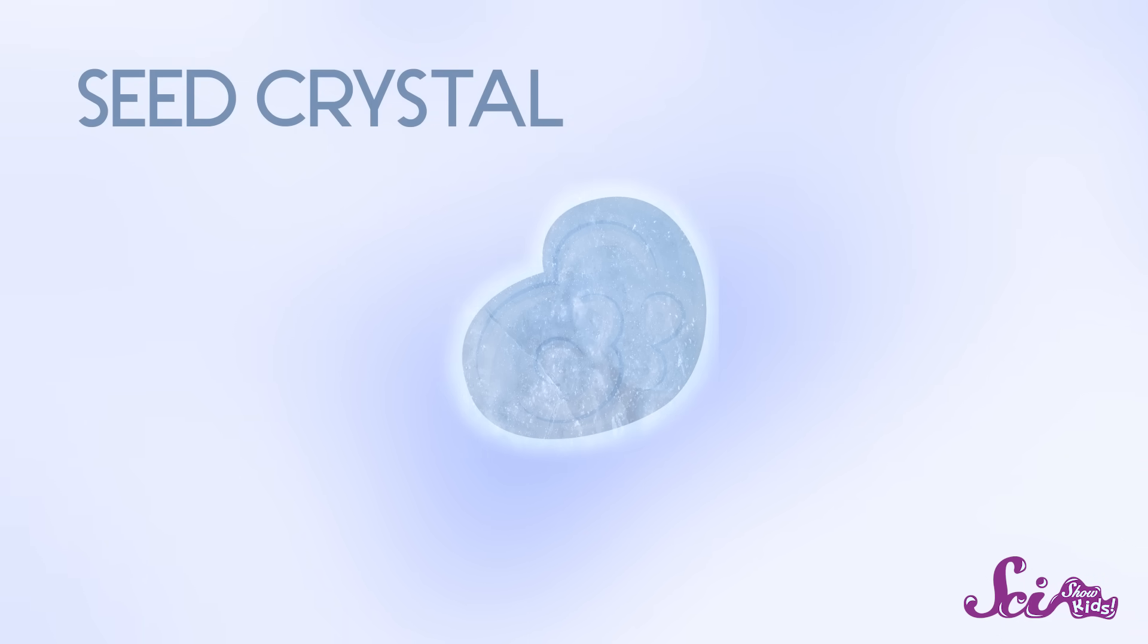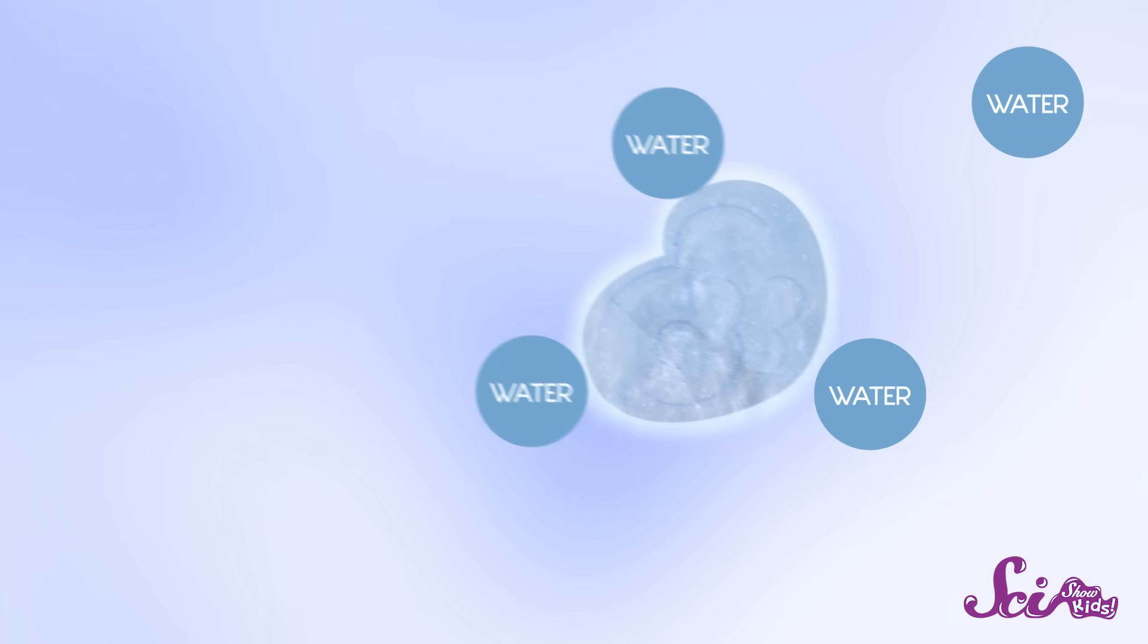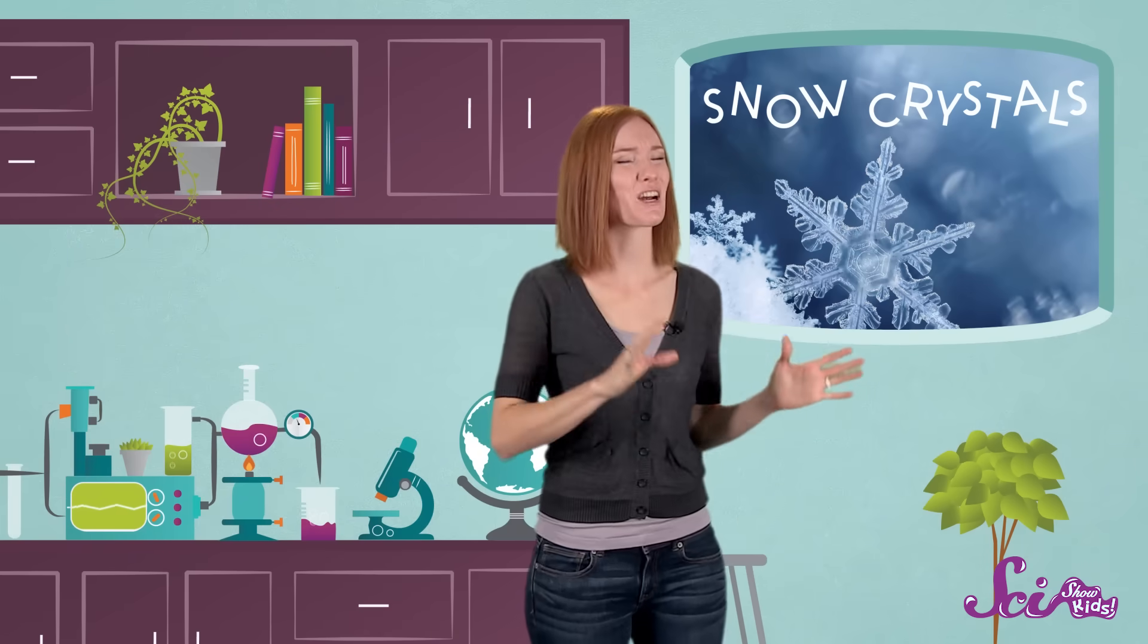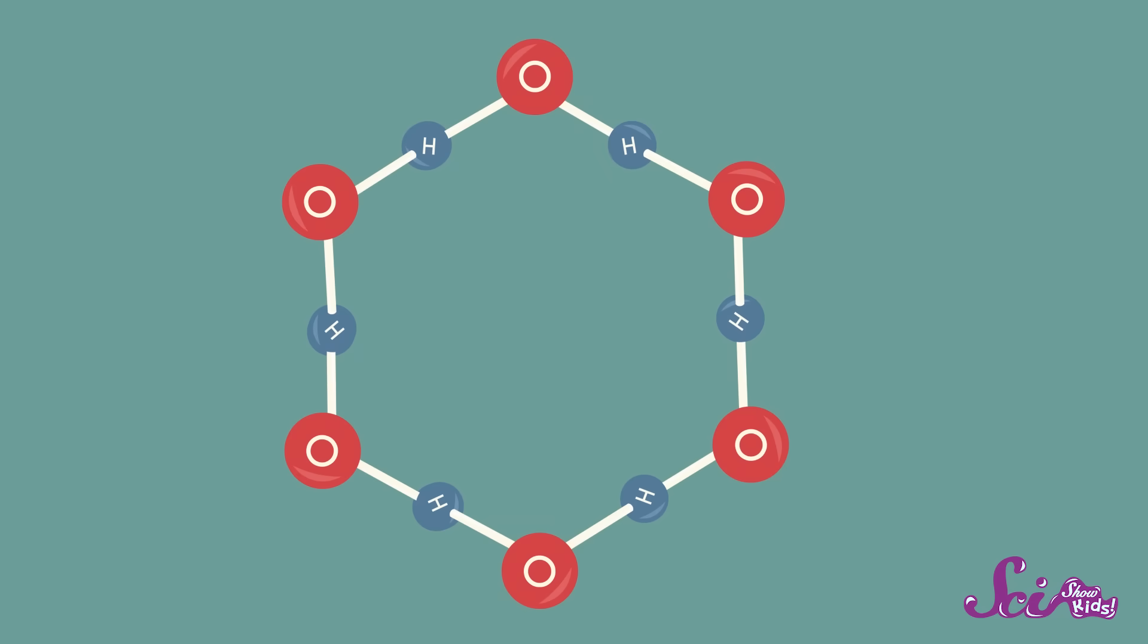And seed crystals can become snow crystals if conditions inside the cloud are just right. As the seed crystal bumps around inside of the cloud, lots of particles that make up water stick to it. The particles that make up water have a very specific shape—they kind of look like the letter V.